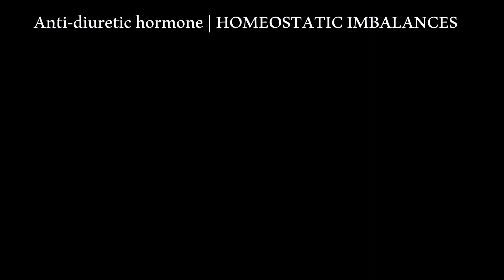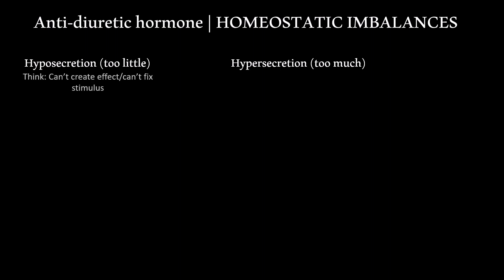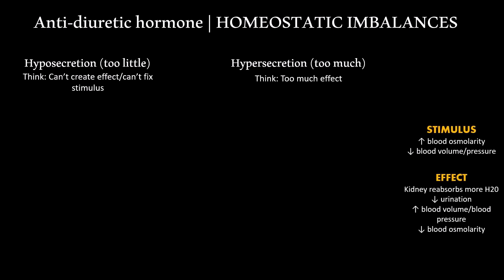The endocrine system has two broad categories of disorders. You have disorders of hyposecretion, where you're not secreting enough hormone, and hypersecretion, where you're secreting too much hormone. With hyposecretion, you can't create the effect — you can't get there because you don't have the hormone. With hypersecretion, you have far too much of the effect. That's why it's really important to have the effects memorized, because all of the symptoms we're going to look at are in some way related to the effect.